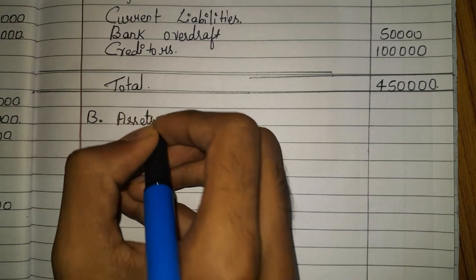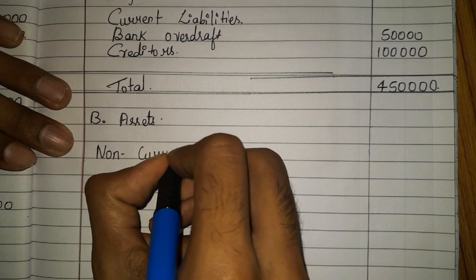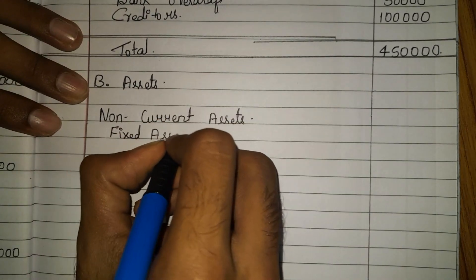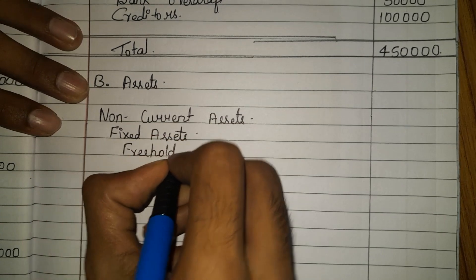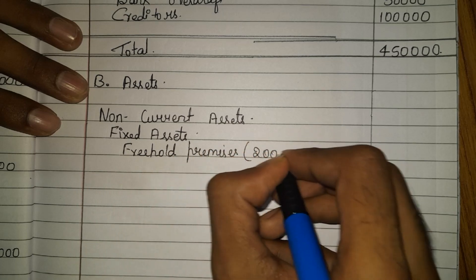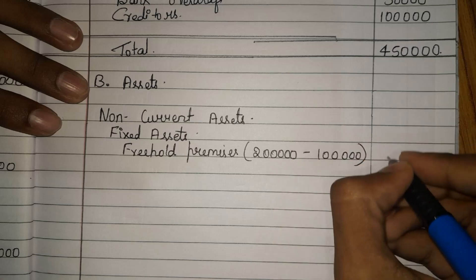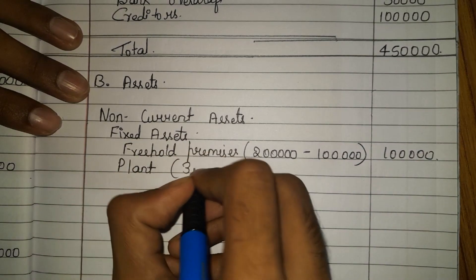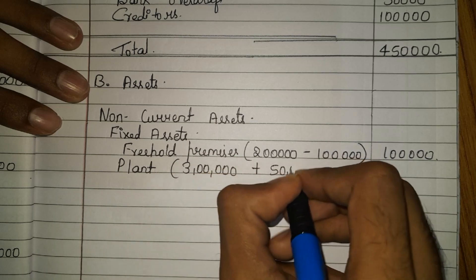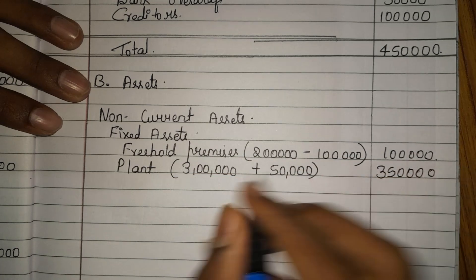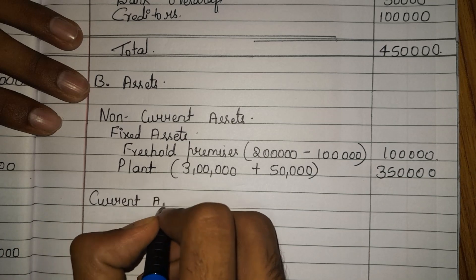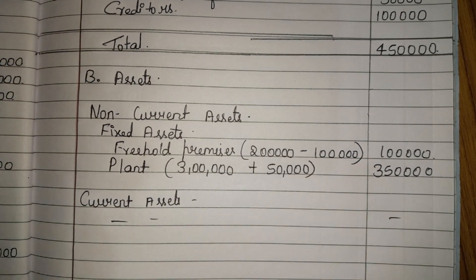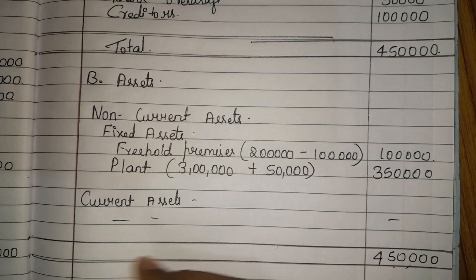On the assets side, under non-current fixed assets: freehold premises — original value Rs.2,00,000 depreciated by Rs.1,00,000, so remaining value is Rs.1,00,000. Plant — original balance sheet value Rs.3,00,000 appreciated by Rs.50,000, so value is Rs.3,50,000. There are no current assets remaining. Total assets = Rs.3,50,000 + Rs.1,00,000 = Rs.4,50,000. Both sides tally.